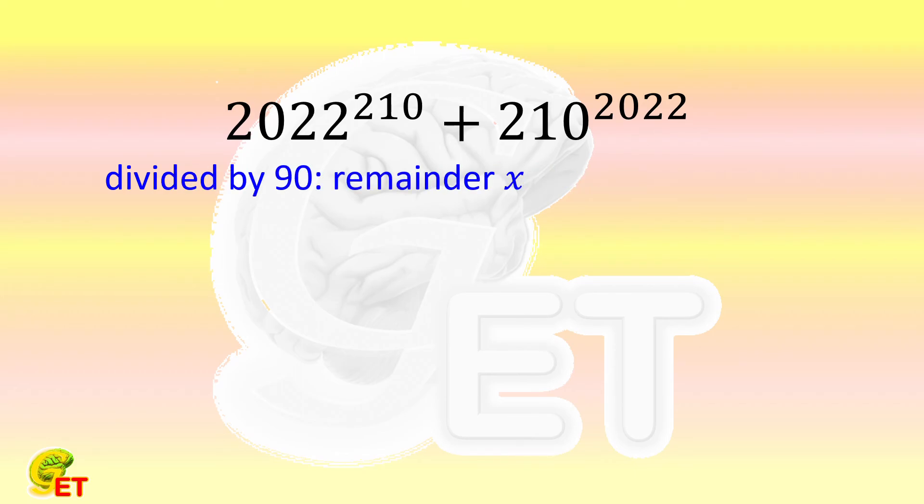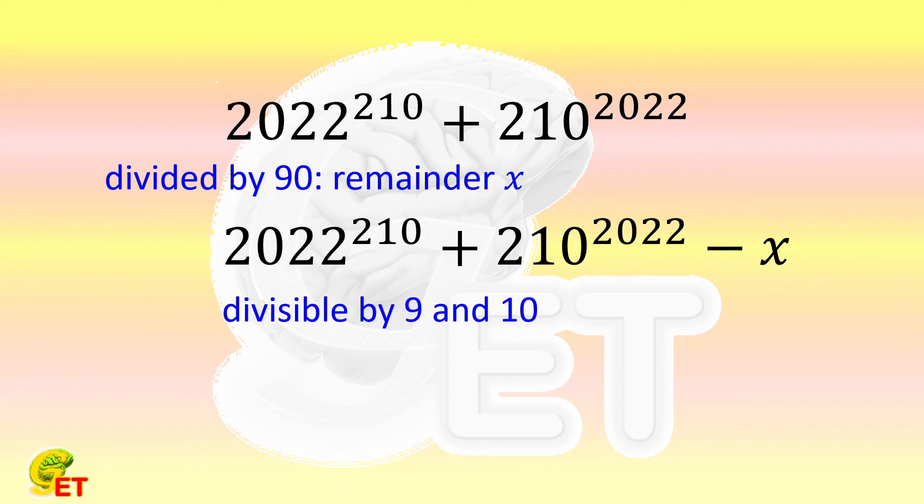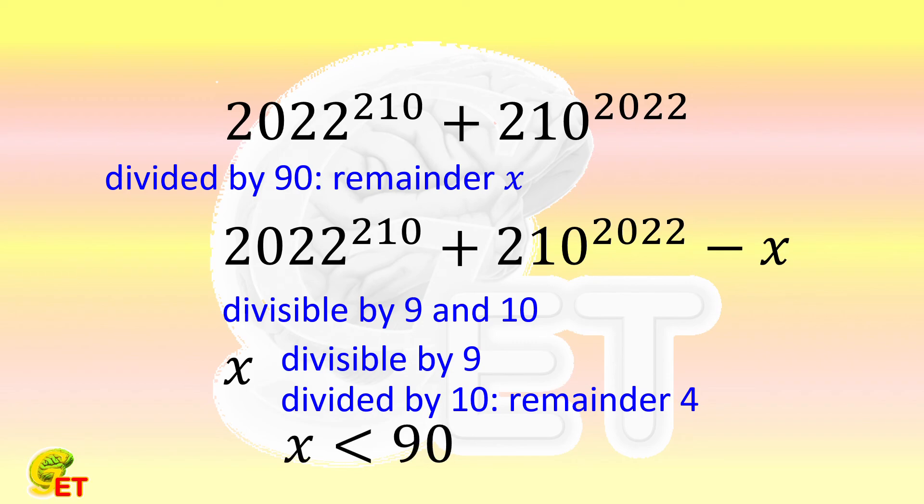We denote this remainder as x. If we consider the difference of this big number subtracting x, we will see it is divisible by both 9 and 10. That is, x is divisible by 9, the remainder of x divided by 10 is 4, and please don't forget x needs to be smaller than 90. There is only one number that fulfills those three conditions, and it is 54.